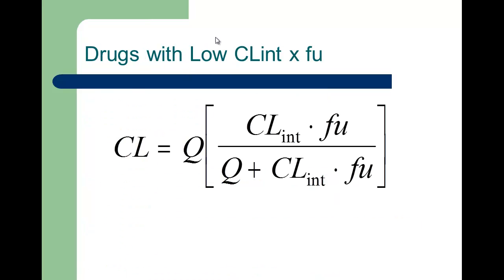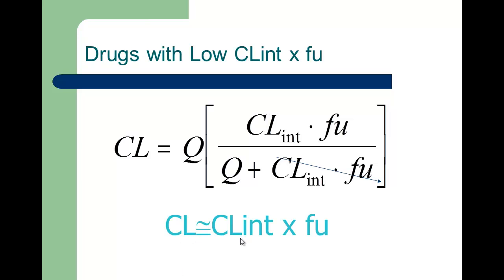So let's talk about low extraction drugs. These drugs are like a rusty dairy with grumpy workers and poor machinery, so as drug comes in, the rate limiting step is the intrinsic clearance and fraction unbound. Since this is the rate limiting step, Q falls out of the equation, and we get clearance approximated by enzyme activity and binding. This is for low extraction drugs.